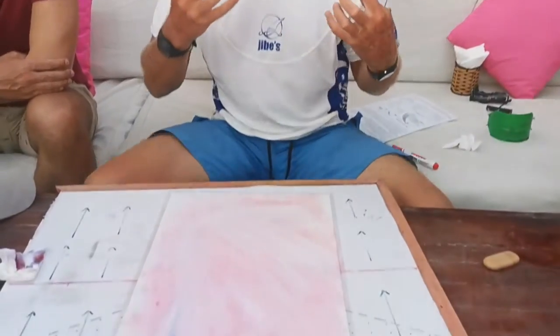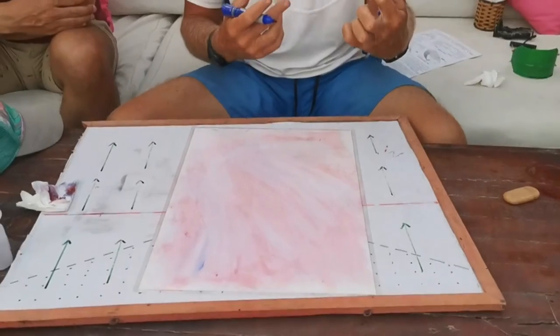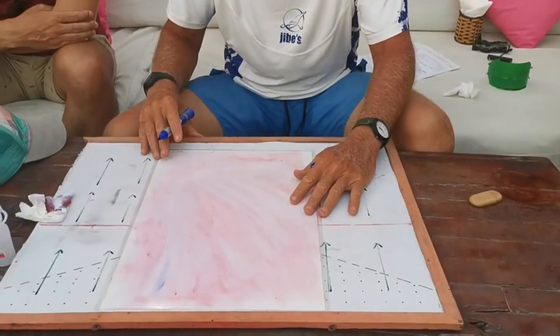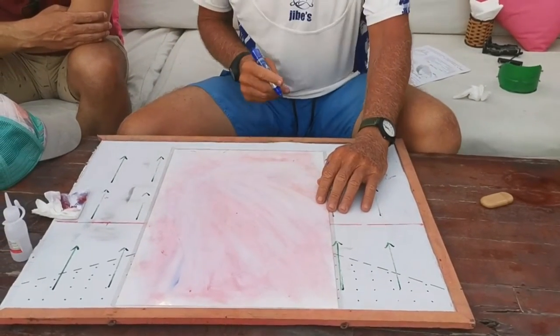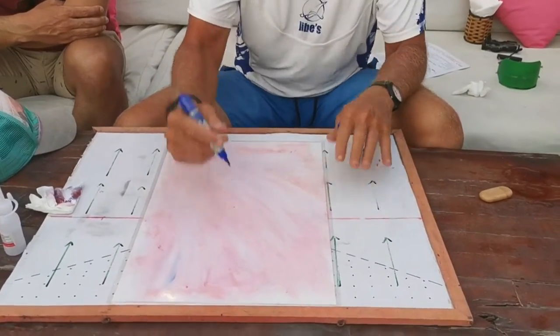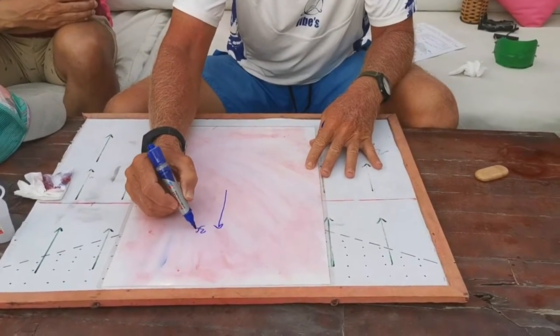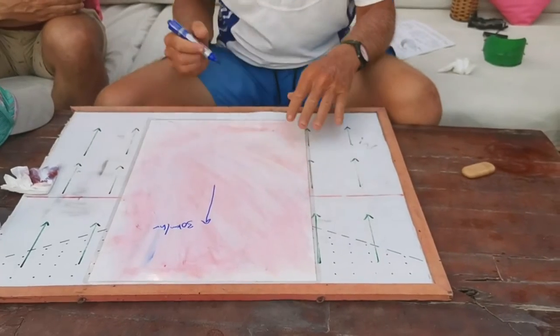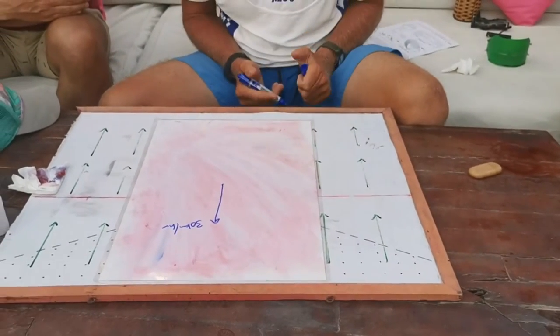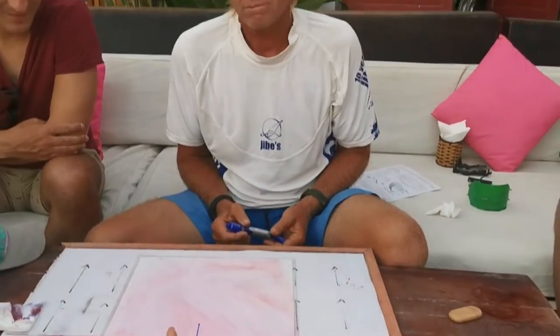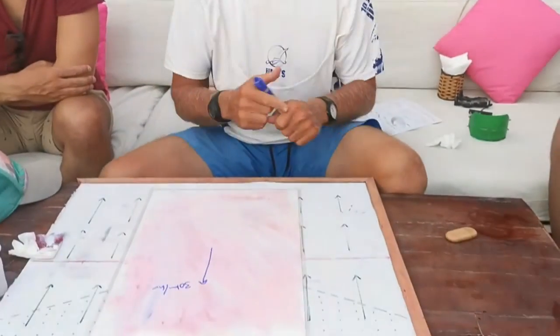What I want to talk about is how the fact that you're moving changes your wind window and changes how the wind is affecting you. Imagine you're in the ocean, there's no wind at all, and you're on a jet ski going 30 km/h. How much wind are you going to feel in your face and in what direction? 30 km in the opposite direction — it's in your face. We're going to call this the generated wind; you feel it because you're moving through space.